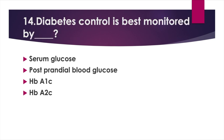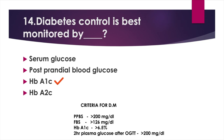Diabetes control is best monitored by — Option A: Serum glucose, Option B: Postprandial blood glucose, Option C: HbA1c, Option D: HbA2c. Answer: Option C, HbA1c. Criteria for diabetes: PPBS ≥200 mg/dL, FBS ≥126 mg/dL, HbA1c ≥6.5%, and 2-hour plasma glucose after oral glucose tolerance test ≥200 mg/dL.